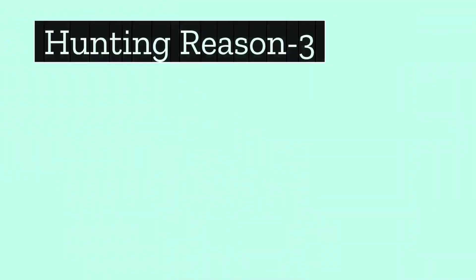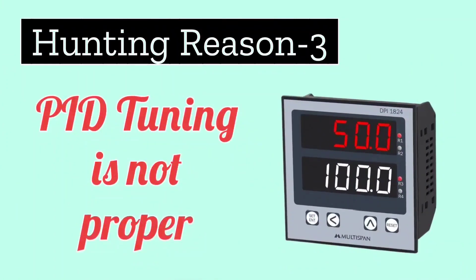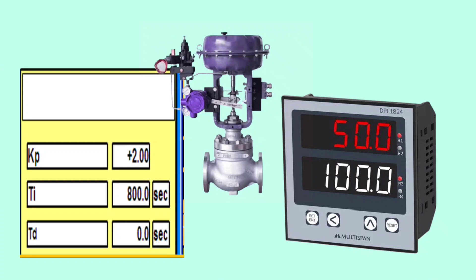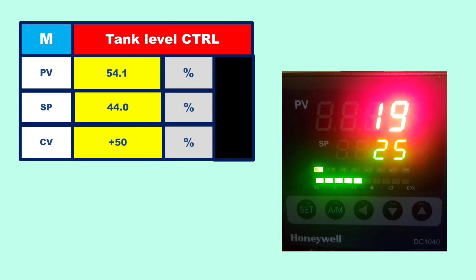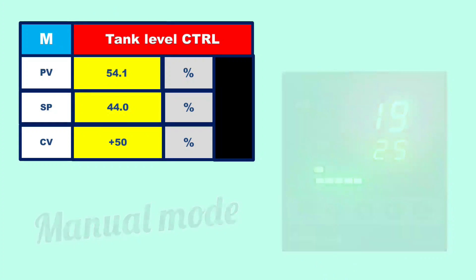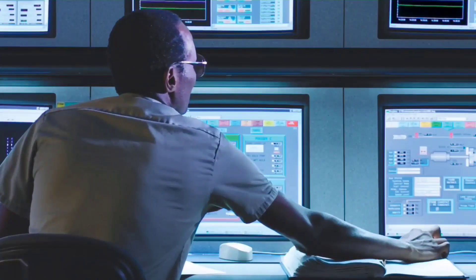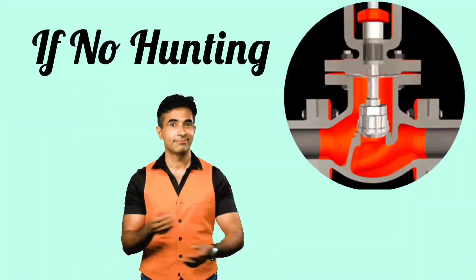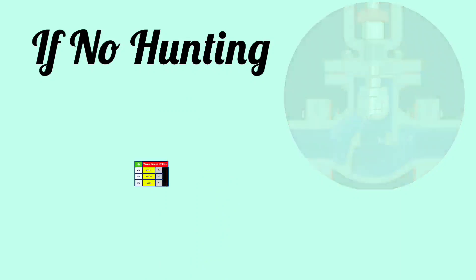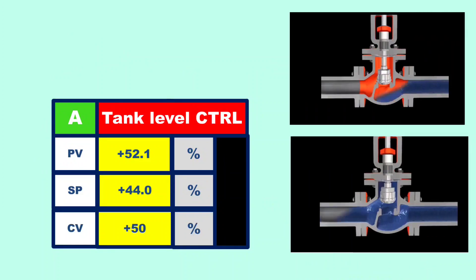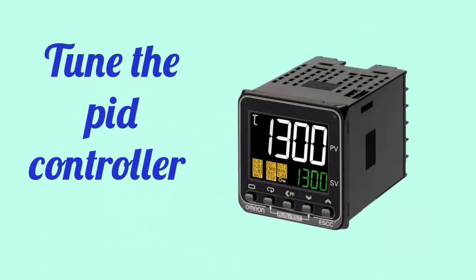The third reason for hunting may be that PID tuning is not proper. Due to improper tuning of the PID controller, the problem of control valve hunting can also arise. To check this, operate the PID controller in manual mode at different outputs and operate the control valve. If there is no hunting in manual mode, then operate the valve from the PID controller in auto mode. If hunting occurs in auto mode, do the tuning of the PID controller.